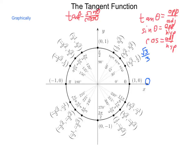Radical 2 over 2 divided by radical 2 over 2? Well, anything divided by itself is 1. Radical 3 over 2 divided by 1 half is just radical 3. 1 divided by 0 is undefined.